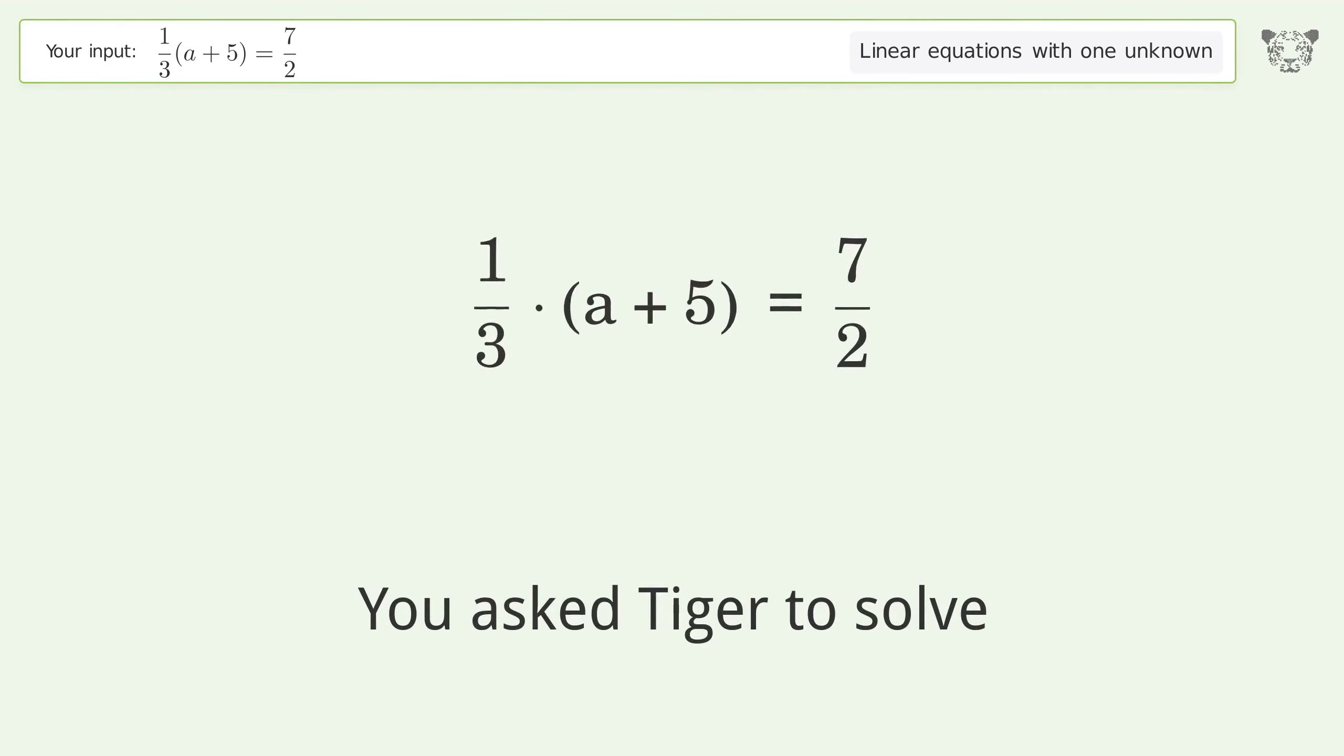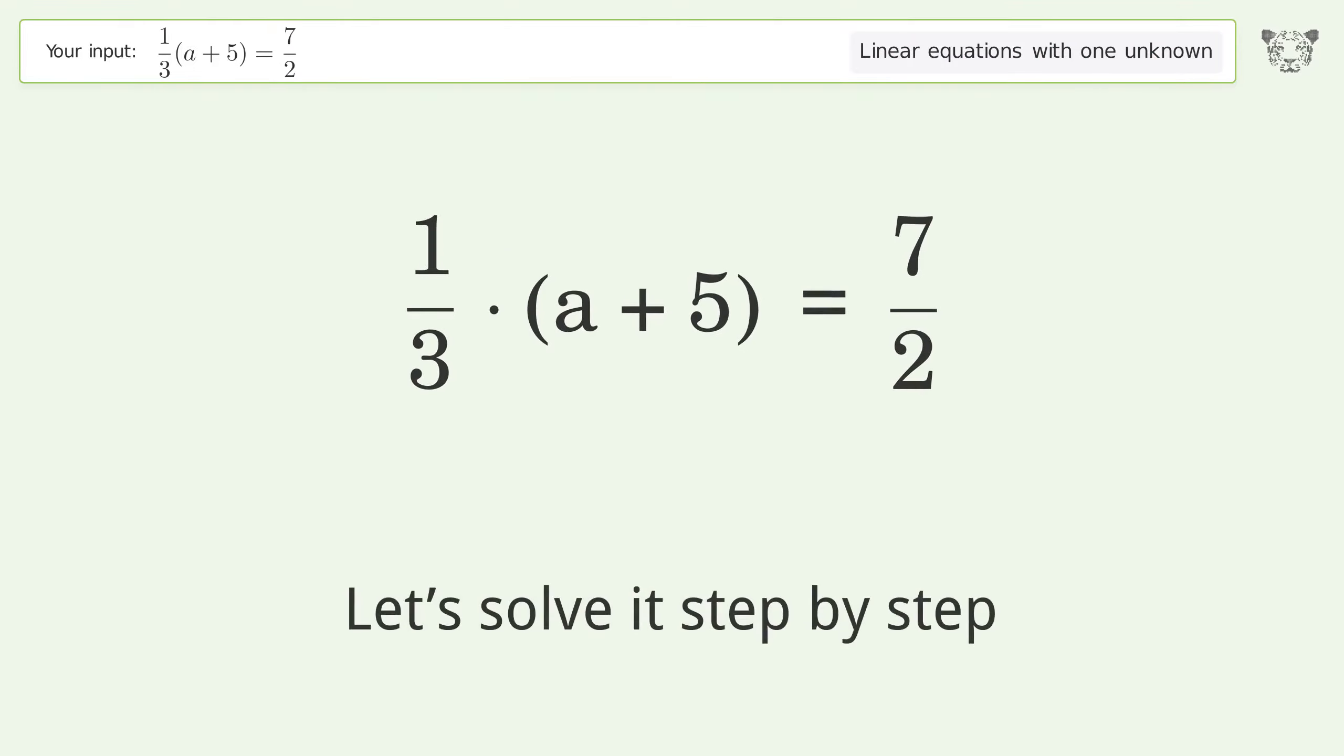You asked Tiger to solve this problem dealing with linear equations with one unknown. The final result is a equals 11 over 2. Let's solve it step by step. Simplify the expression.